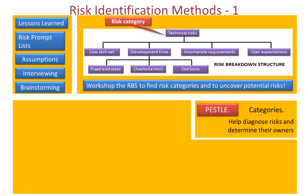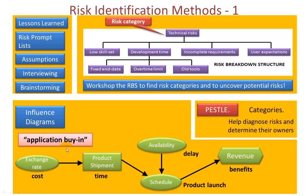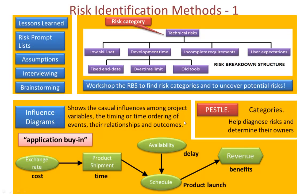I've mentioned PESTLE already — these categories help diagnose risks and determine their owners. Suppose your project had to buy in an application from a third party. You simply create a diagram like this. Imagine if the third party was in a different country: the exchange rate may escalate costs; product shipment time might cause delays to the schedule; availability — off the shelf or custom-made — could cause extra delays. Delays to the schedule could delay the product launch and affect revenue, and hence the realisation of benefits within given timeframes, which would have a direct impact on the business case. These show the causal influences among project variables, the timing or ordering of events, their relationships and outcomes.